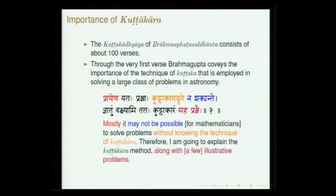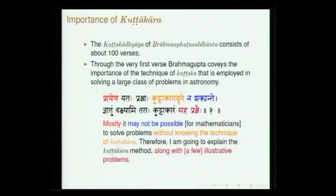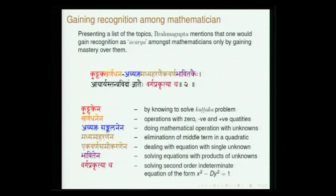He starts this chapter with a sloka giving the importance of Kuttakara. He gives the Kuttakara algorithm and then about 20–25 verses giving various kinds of problems with examples drawn from different disciplines. Kuttakara — without Kuttakara it is almost impossible to handle equations with unknowns, and therefore he says: 'I describe this Kuttakara with various illustrations.' The verse summarizes the various topics discussed in this chapter called Kuttakaradhyaya.